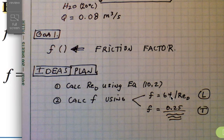Let's go ahead and begin. The plan of attack is documented. Calculate Reynolds number with equation 10-2, then calculate the friction factor using either this equation for laminar flow or this equation for turbulent flow. Let's go ahead and go to calculations.